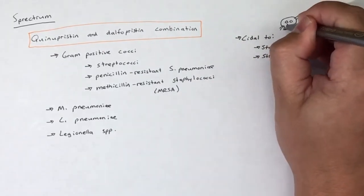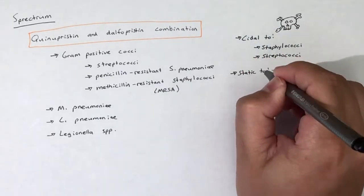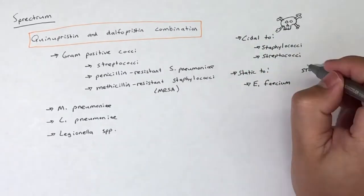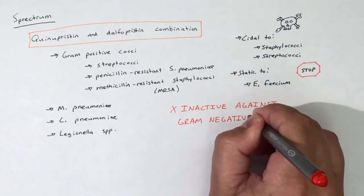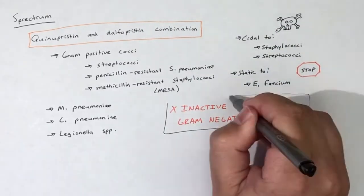Quinupristin/Dalfopristin is bactericidal against many strains of Staphylococci and Streptococci, but bacteriostatic against E. faecium. It is important to note that the combination of Quinupristin-Dalfopristin is inactive against gram-negative bacteria.